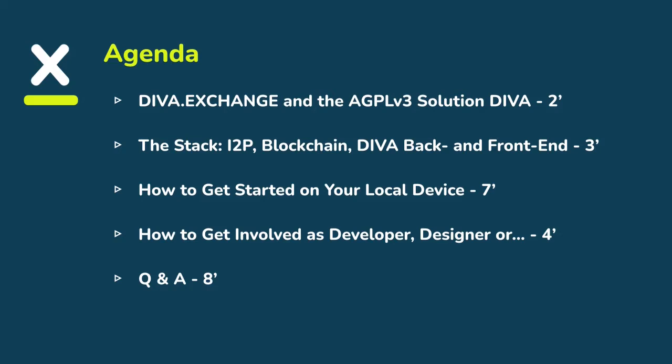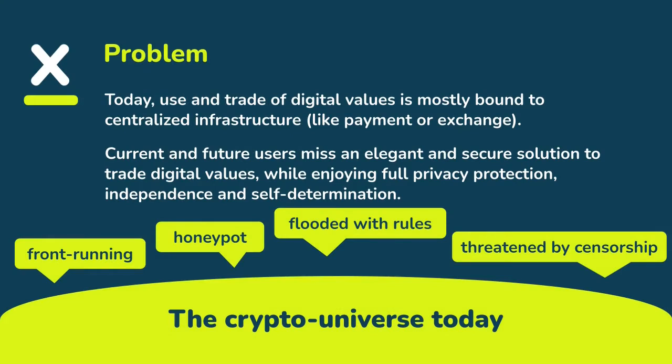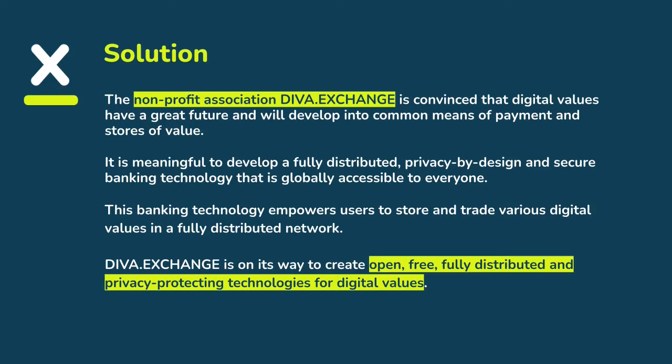At the association diva.exchange, we saw that users miss an elegant and secure solution to trade and store their digital values like cryptocurrencies. They want to enjoy full privacy protection, independence, and self-determination. So we created the free and open source software package called Diva. It's open, free, fully distributed, and protects the privacy of end users — banking technology for everyone. The association diva.exchange is open to everyone, so if you want to participate, just join over our website.